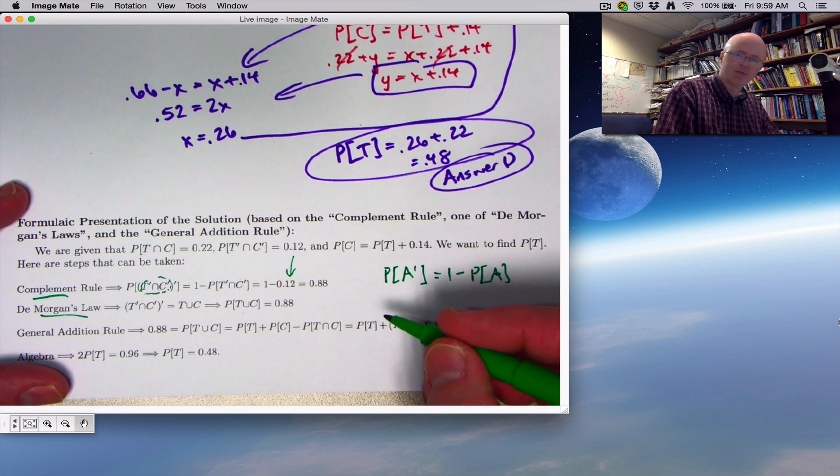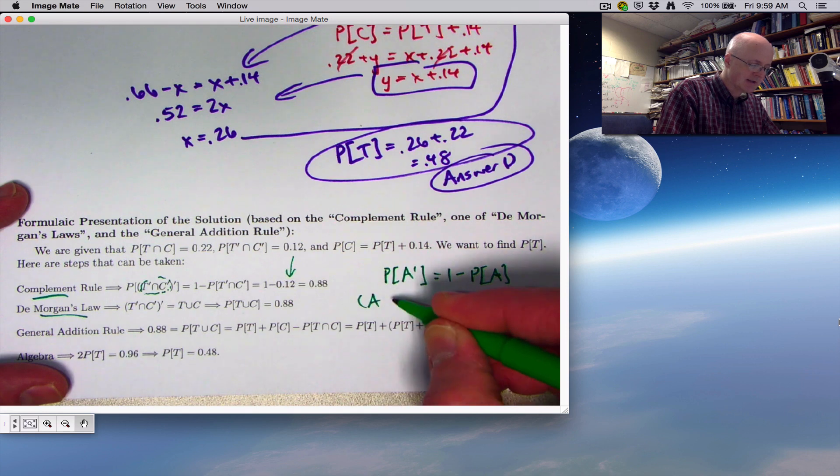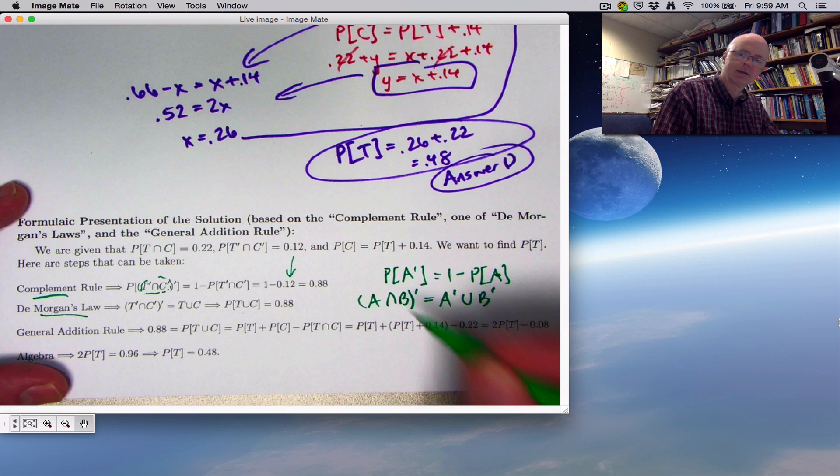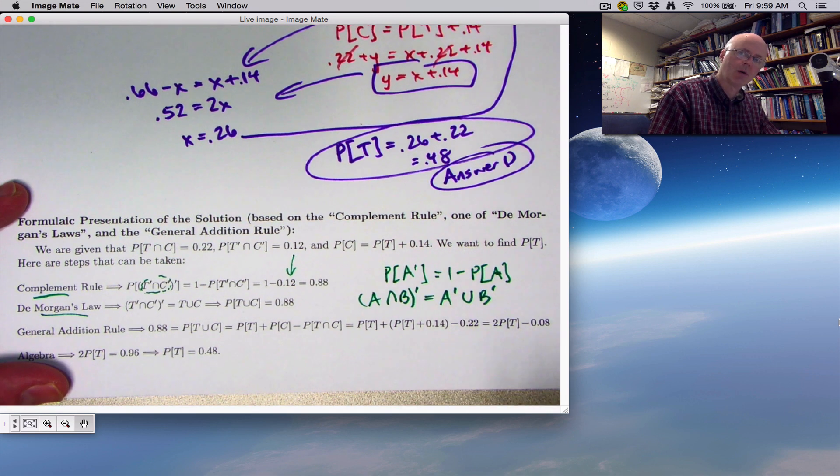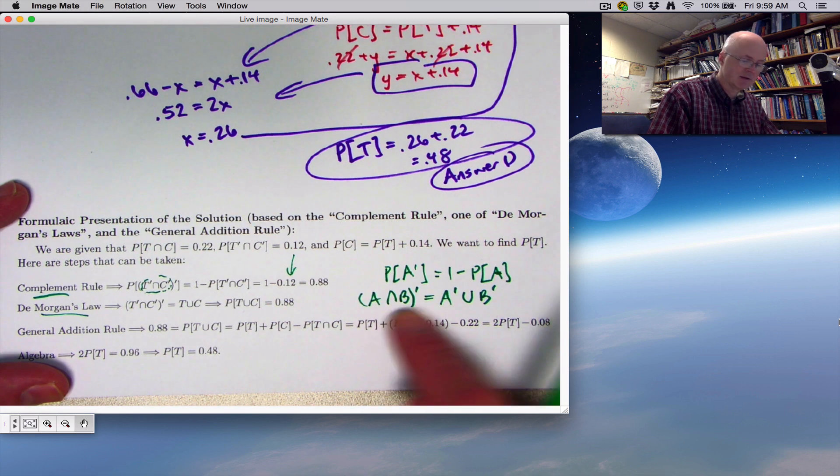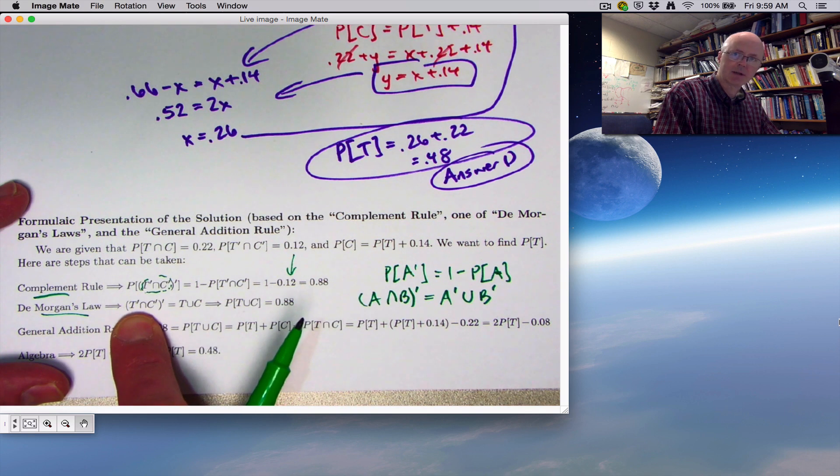What's DeMorgan's Law? In general, this version could be written as A intersect B complement is A complement union B complement. It's kind of like you can bring the complement symbol, the prime, through the parentheses, but if you do so you have to change the intersection to a union. You have to flip it. It also works the other way. If this were a union here, this would become an intersection. That would be the second of DeMorgan's Laws.